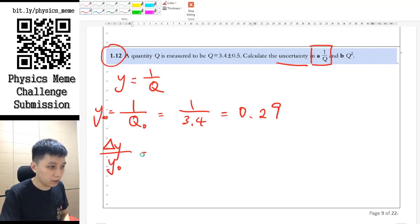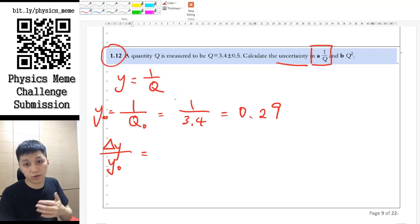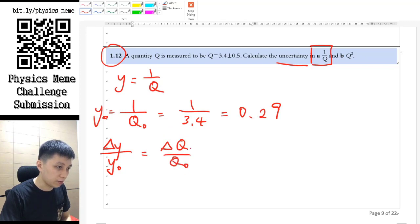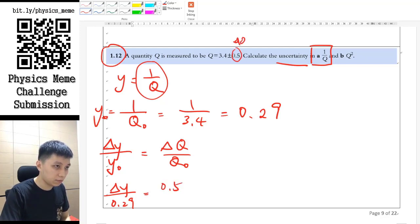And then what you have to do is find out the uncertainty of y. That is delta y over y log, and that should equal to, because we said 1 divided q is the same as simply q, so it will be delta q over q log. And so by substitution, you will find out delta y, which is in fact the one that you want to find 1 over q, over y log. y log is the one we found, so 0.29, delta q is 0.5 from this, this is delta q over q log, which is 3.4.